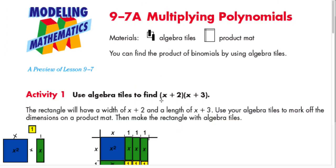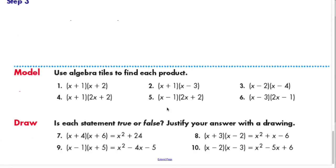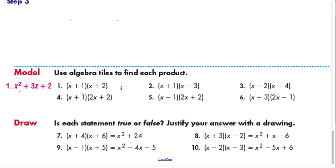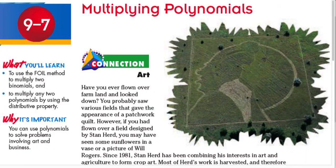Multiplying (x−1)(2x+2) equals 2x² − 2. Let's look at the answer key to see if that's correct — and I think it is. The answer is correct. There it is: 2x² − 2.